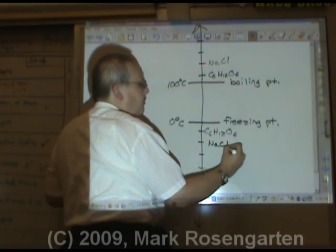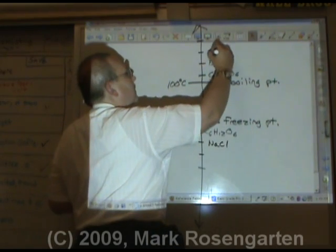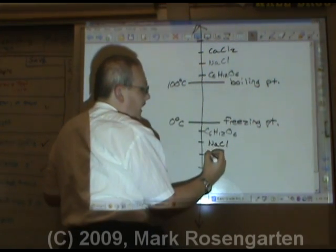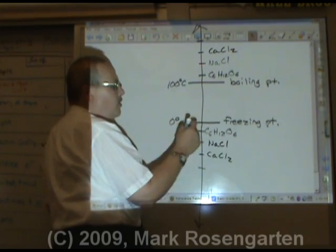Sodium chloride ionizes to form two ions, sodium and chloride. Calcium chloride ionizes to form three ions, one calcium and two chloride.